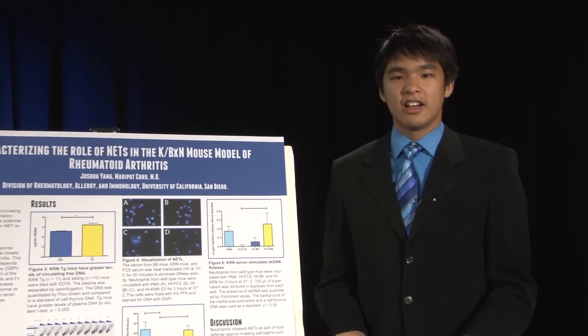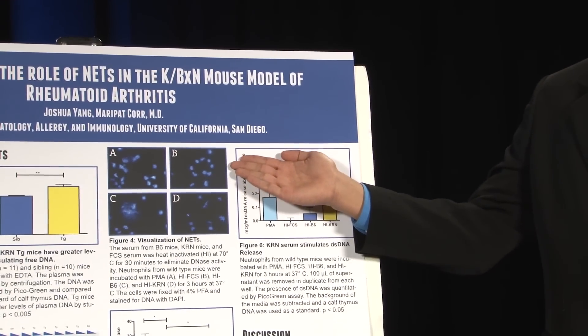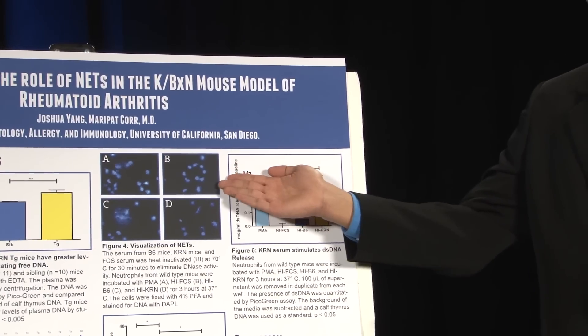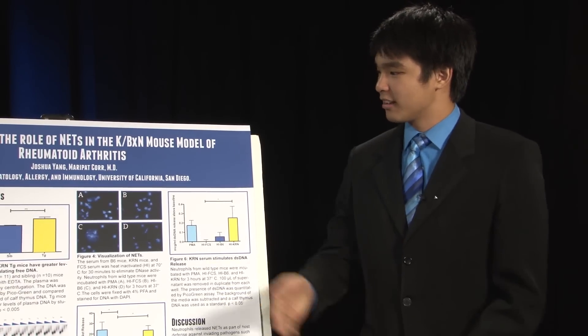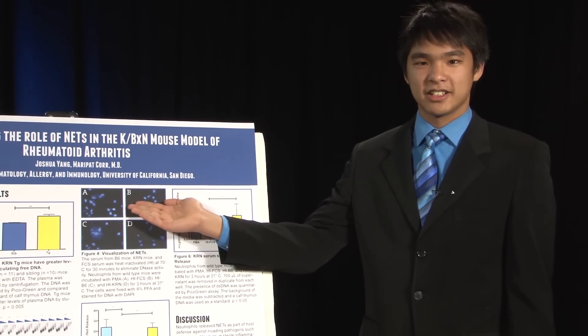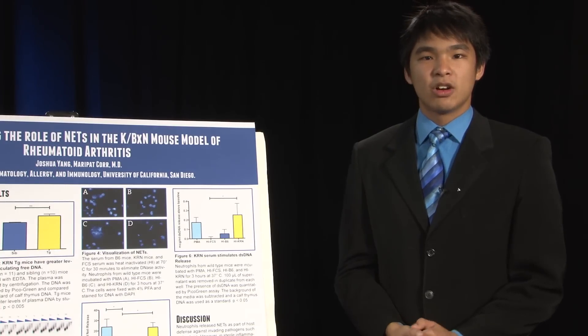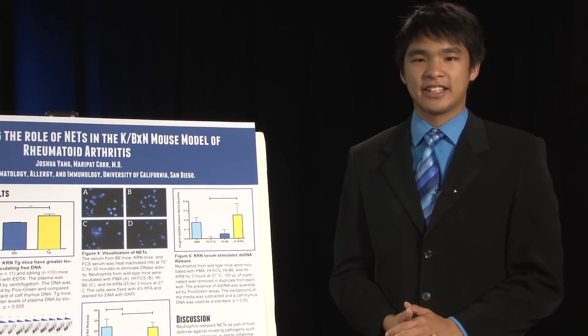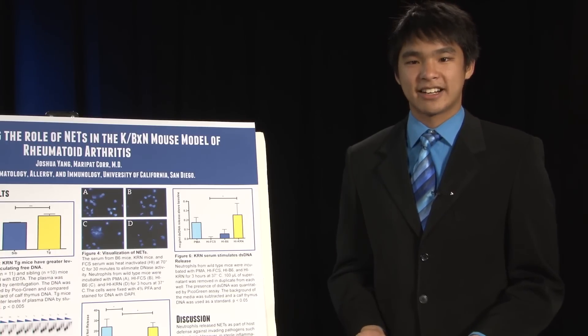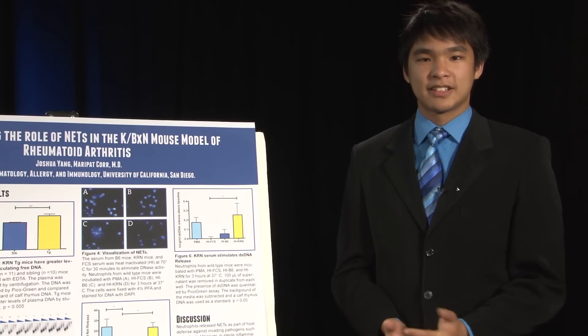We then wanted to determine whether KBXN serum would cause increased NET release. To do that, we did a DNA stain on neutrophils in order to visualize their nuclei. In figure 4, panel B, we see unstimulated resting neutrophils with no NET release. However, in panel B, we chemically stimulated neutrophils to release NETs, and we see high levels of NET release. In panels C and D, we used heat-inactivated wild-type serum and heat-inactivated KBXN serum, respectively, in order to determine the relative levels of NET release.